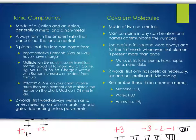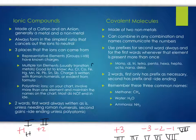Representative elements have known ions — use the periodic table to determine them. Multiple ion elements are typically transition metals. A good list to know: gold, chromium, cobalt, copper, iron, mercury, manganese, nickel, lead, tin, and antimony. The trick with these is that when writing the name from a formula, you must include Roman numerals. Roman numerals tell you the charge — not how many atoms you need — so a Roman numeral four means the charge is plus four.